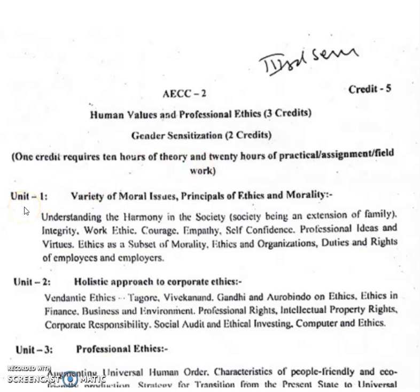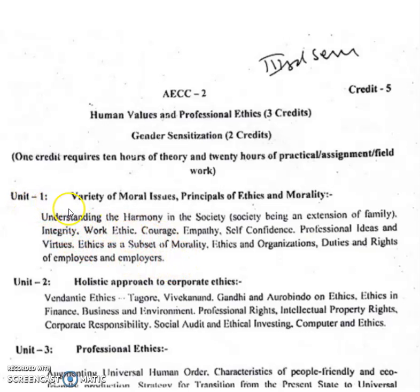Now you can see the syllabus. Unit 1: Variety of Moral Issues, Principles of Ethics and Morality. Topics include: understanding the harmony in the society, society being an extension of family, integrity, work ethic, courage, empathy, self-confidence, professional ideas and virtues, ethics as a subset of morality, ethics and organizations, and duties and rights of employees and employers. These topics you have to study under Unit 1.